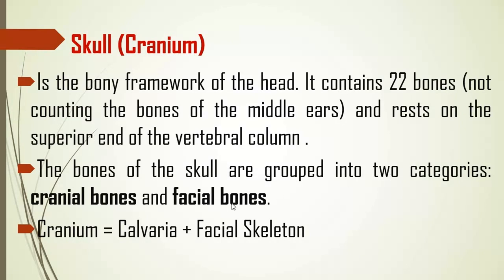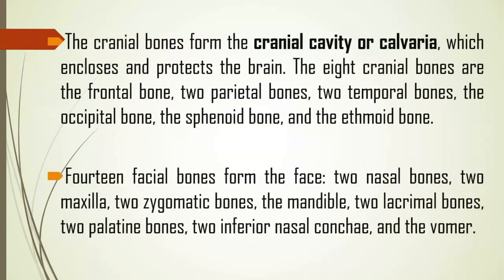The bones of the skull are grouped into two categories: the cranial bones and the facial bones. The cranial bones cover your brain, while the facial bones make up your face. The cranial bones form the cranial cavity or calvaria, which encloses and protects the brain.